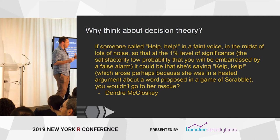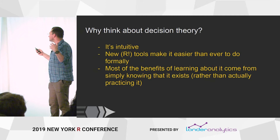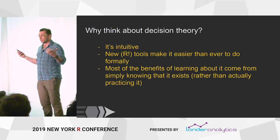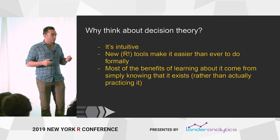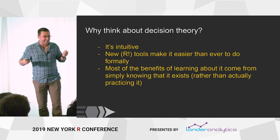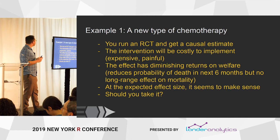This really gets to the core problem of decision theory: we want to make decisions and we have highly non-linear responses given some piece of information. Why should you think about it? It's really intuitive, you probably do it already, there are new R tools that make it easier. I don't even think you need to do it formally to get the majority of the benefit — simply knowing that it exists gets you most of the way there, putting you in a frame of mind to incorporate uncertainty into decision making more systematically.